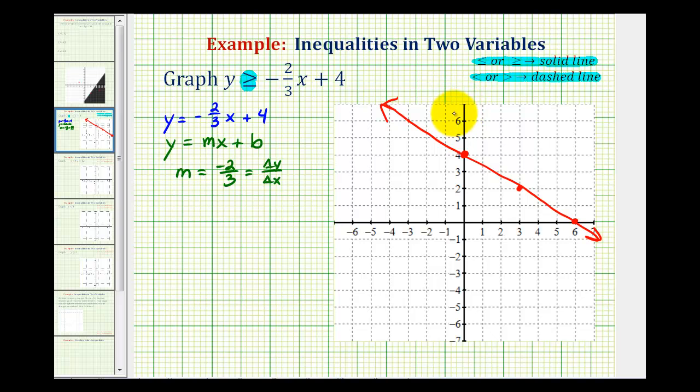we're going to shade above the line. So every single point in the half plane above this line is part of the solution to this inequality and therefore part of our graph.